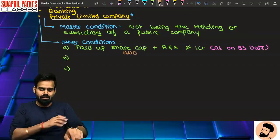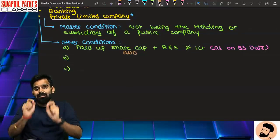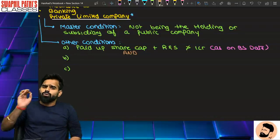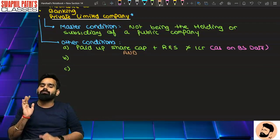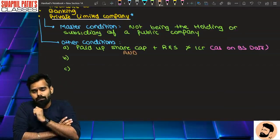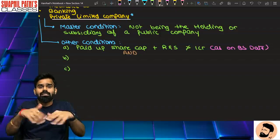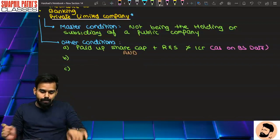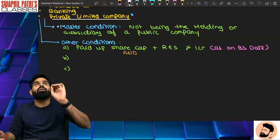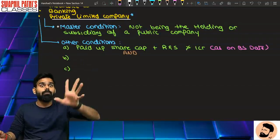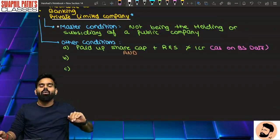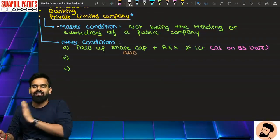Before the second condition - if there is a private limited company whose paid-up share capital and reserves and surplus does not exceed 1 crore as on balance sheet date, first checkpoint is clear. Paid-up share capital and reserves and surplus should be equal to or less than 1 crore, not more than 1 crore as on balance sheet date.